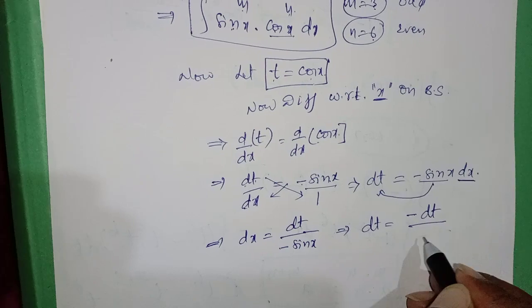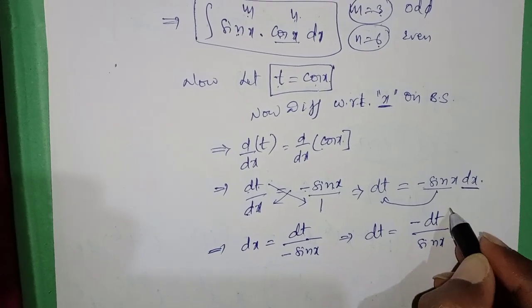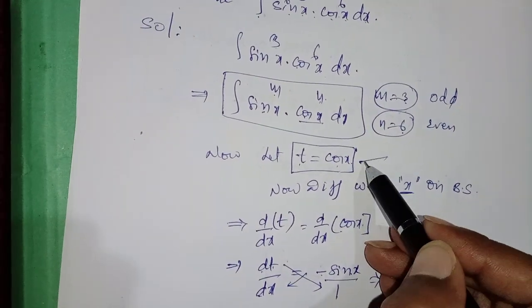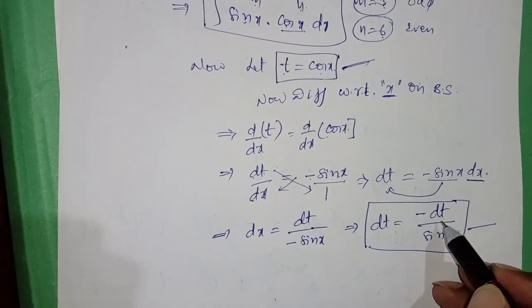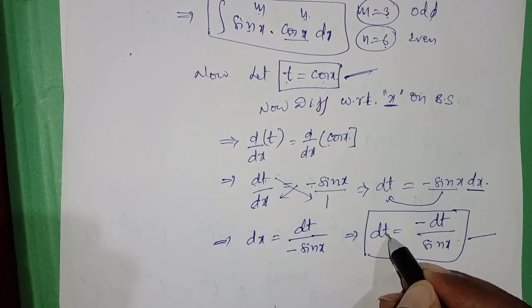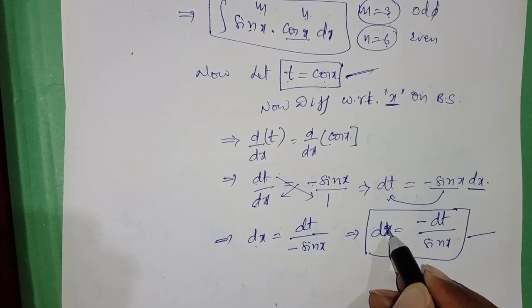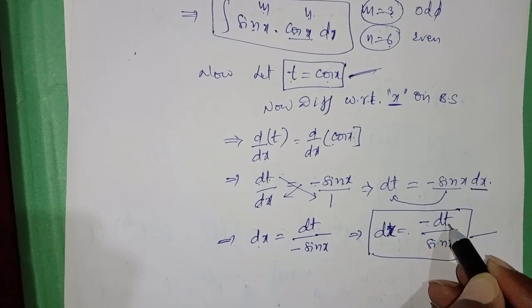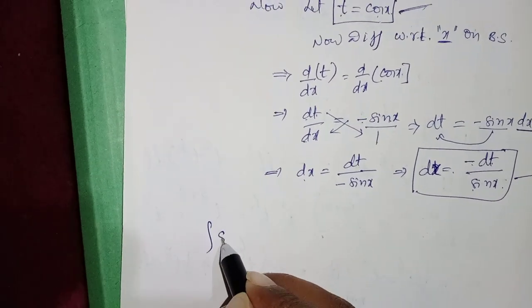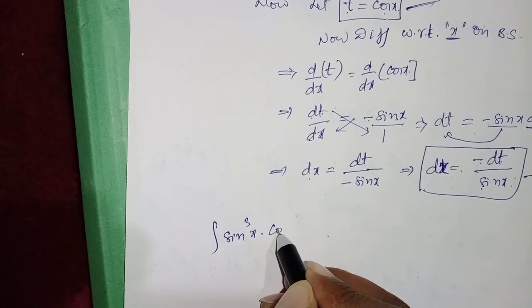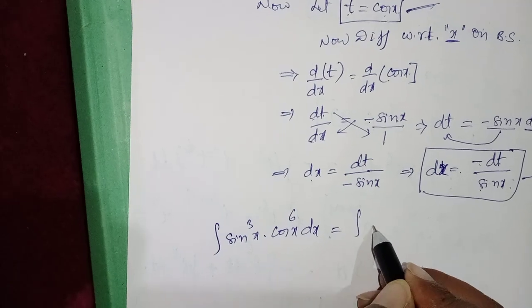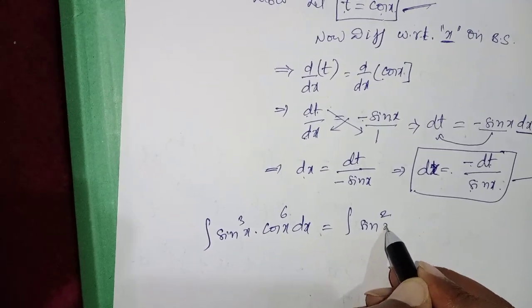Summarizing the substitution: t = cos x and dx = −dt / sin x. Now consider the given integral: ∫sin³x · cos⁶x dx.